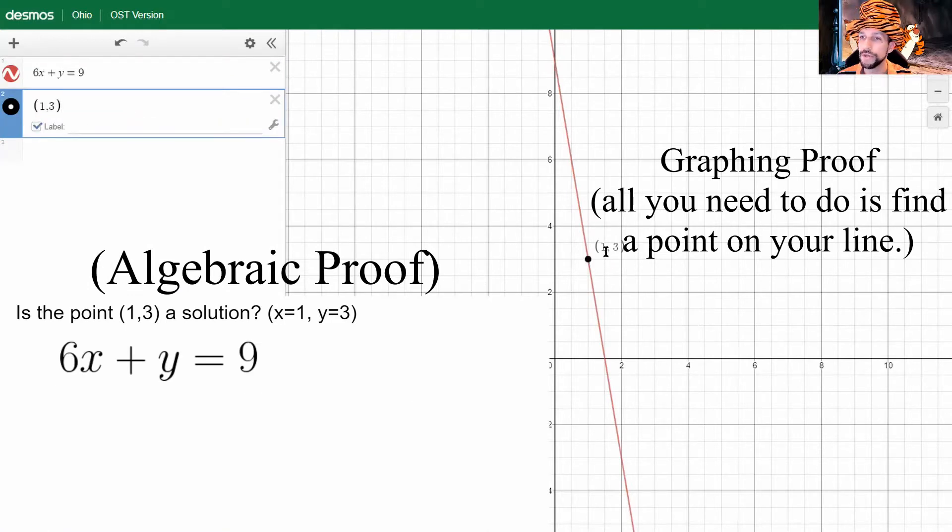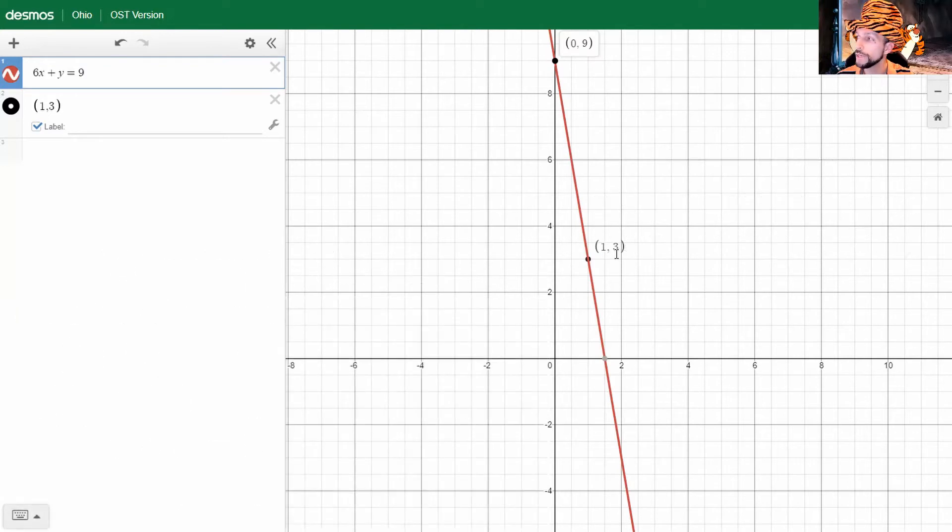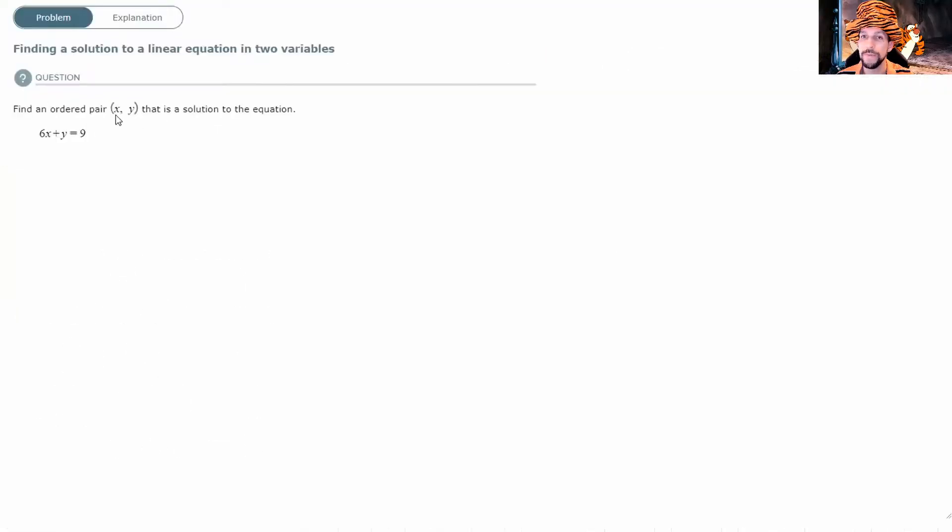And yes, the solution 1, 3 is on my line. So I can see clearly the y-intercept 0, 9, or this point 1, 3 will be solutions. I like 1, 3 because they're smaller numbers. So x is 1, y is 3, or the point 1, 3 would be my solution.